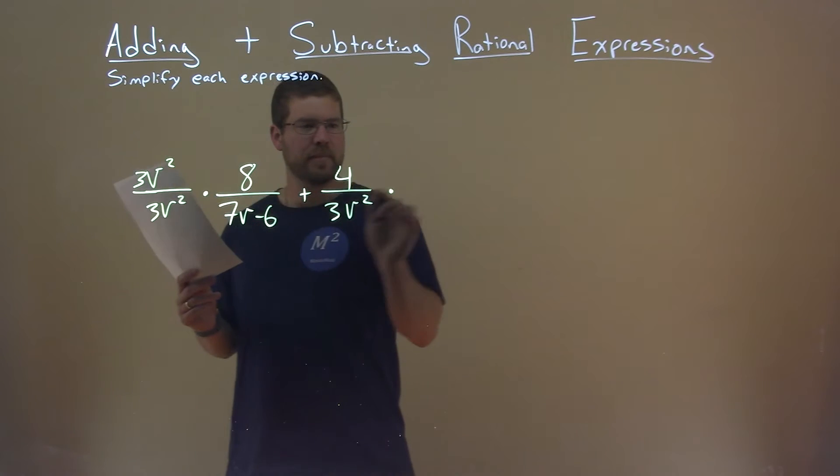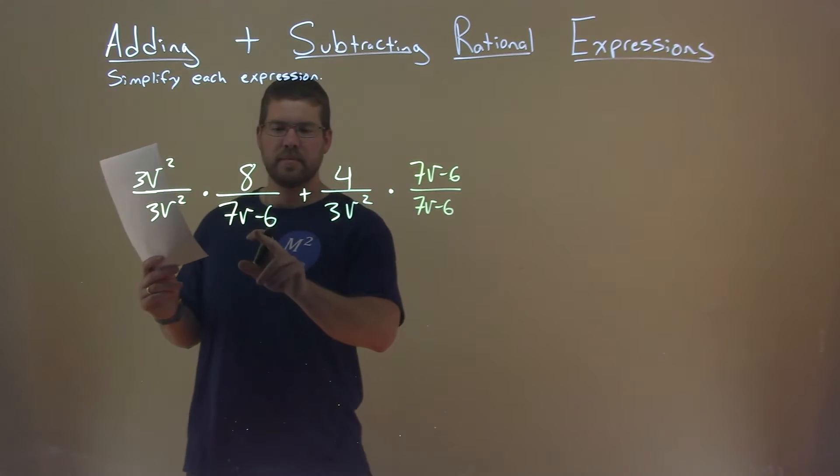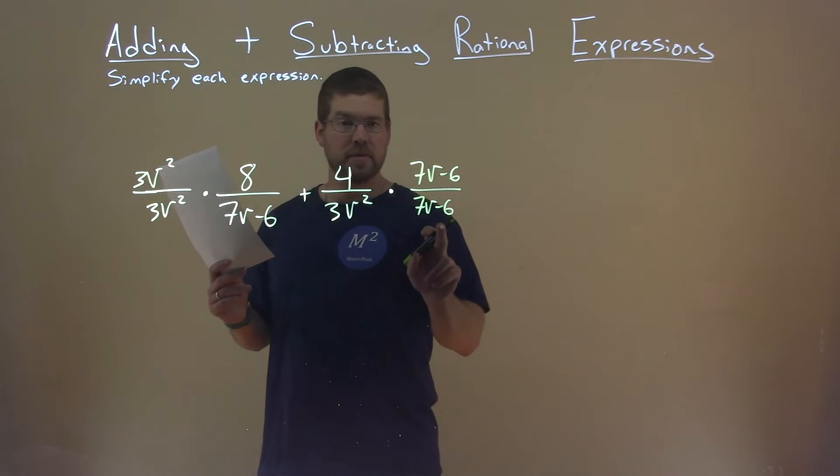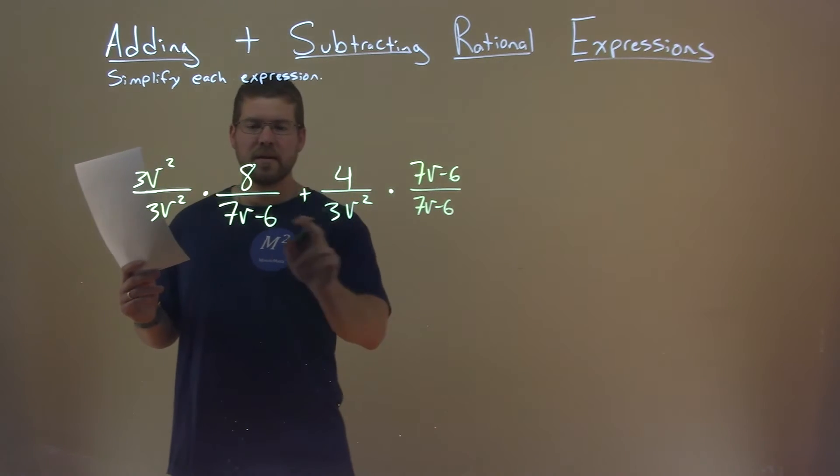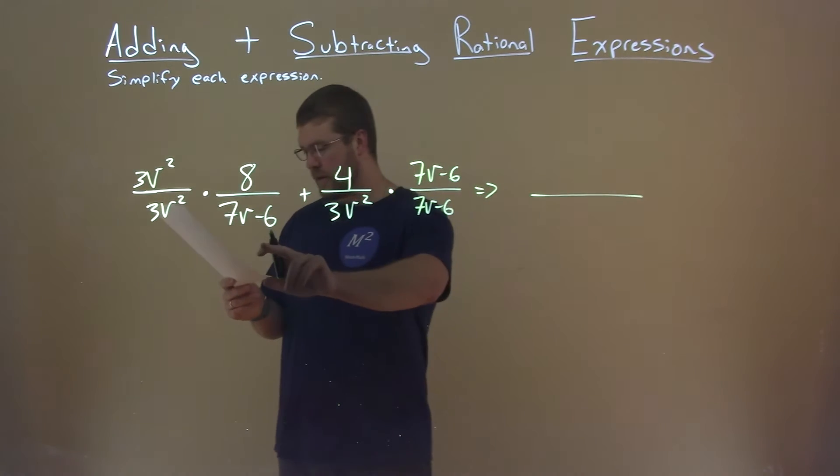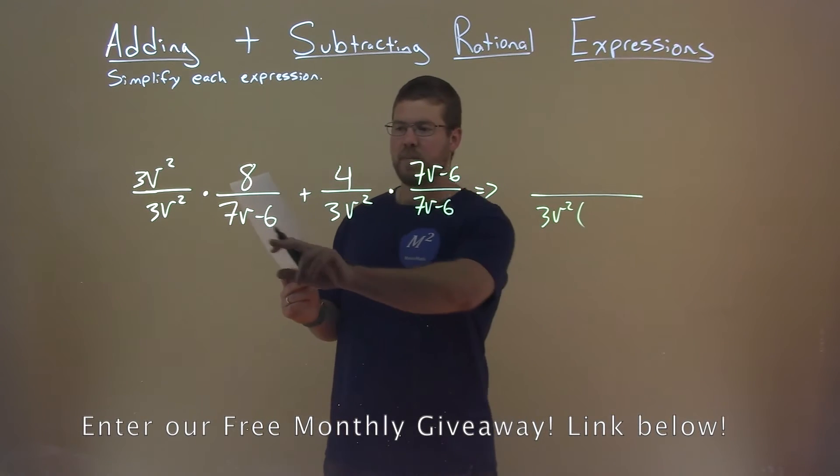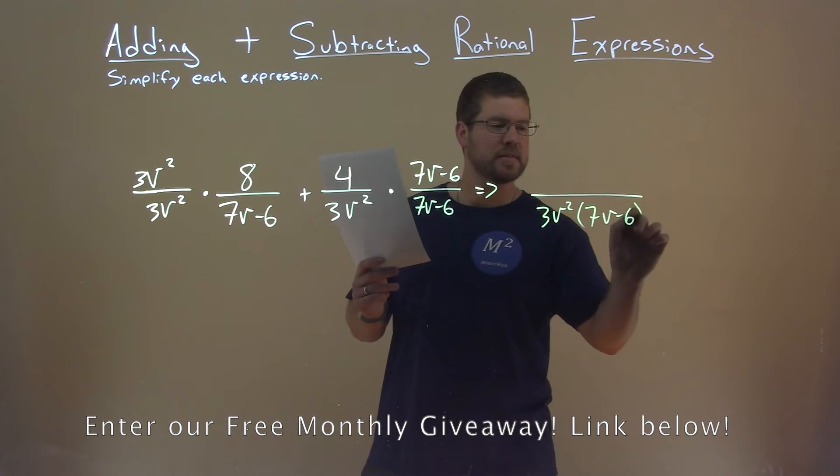Now I'm going to do the same thing here. I have 7v minus 6 over 7v minus 6 there. Again, same thing over itself is 1. What that does is it's going to give me what we call a common denominator, which is going to be 3v squared times 7v minus 6.